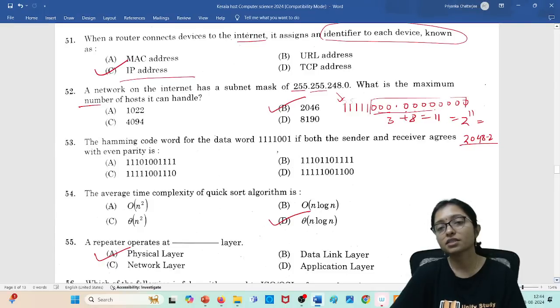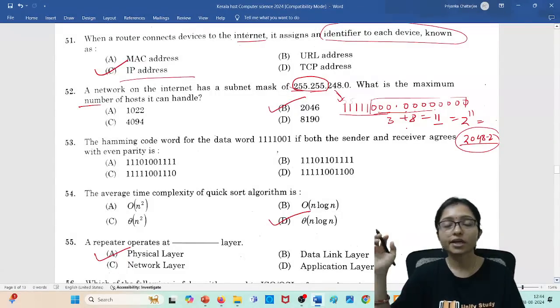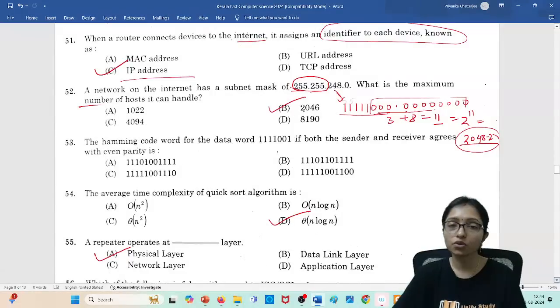Here three bits are zero because 248, I have covered, is 255.255, so all eight bits are one. So here total 11 bits are zero. 2^11 means 2048 minus 2, because always two will be reserved for broadcast and net ID. So 2046 hosts will be possible maximum.